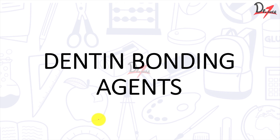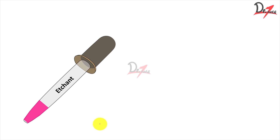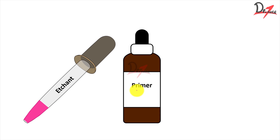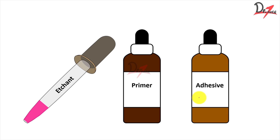In the dentine bonding agent, we have three major ingredients: an etchant, a primer (also called the coupling agent), and an adhesive. There are various generations of dentine bonding agents, and over time we have progressed — today we don't need all three separate bottles; we can have one component and apply it to get all three effects. Let us first see what each does individually so we can understand how they are combined in the various generations.